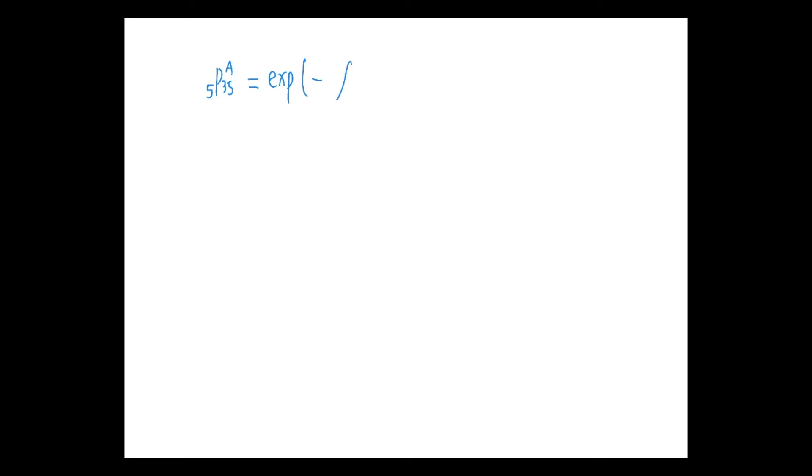So it is from this formula, from 0 to 5, five years, mu 35 plus T dt, and we denote it by country A.